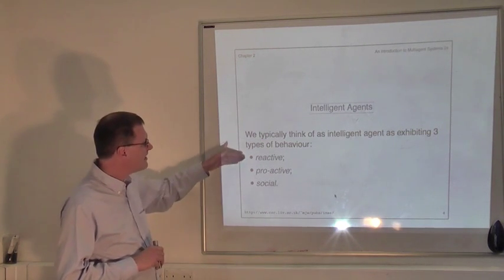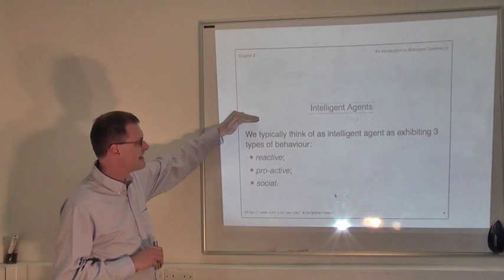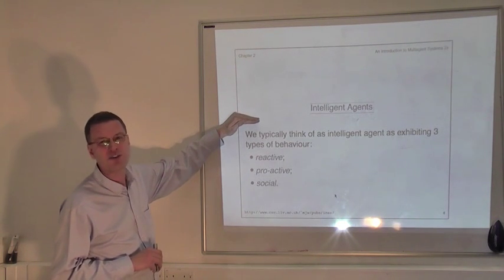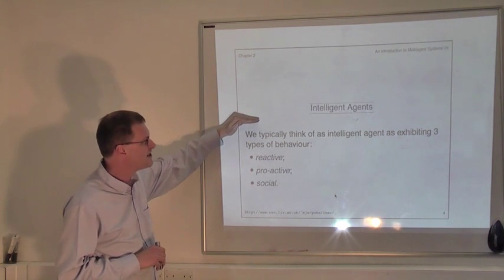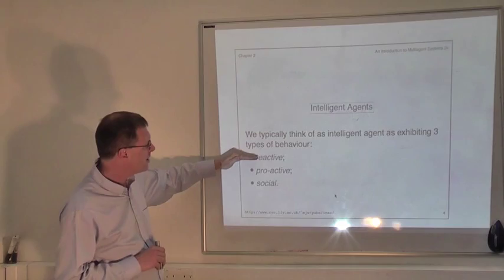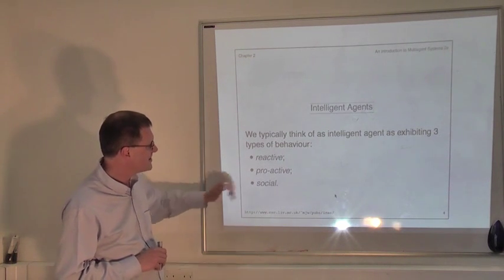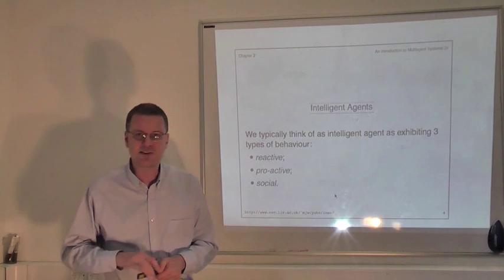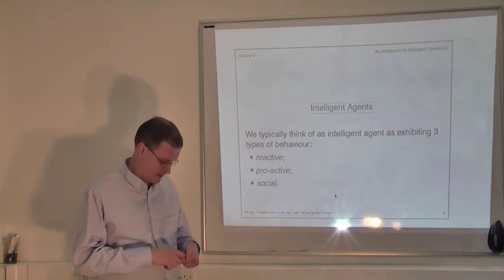So what kind of attributes are we thinking about when we talk about intelligent agents? I would argue that we typically think about three attributes associated with this notion of agency: the notions of reactiveness, proactiveness, and sociability. In this video I'm going to explain what I mean by these three attributes and why they're important.